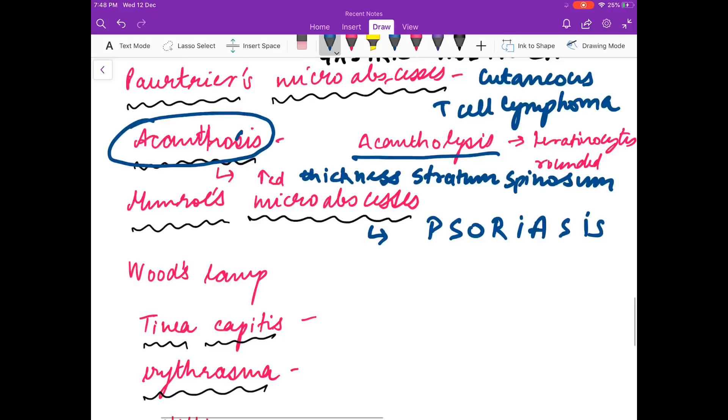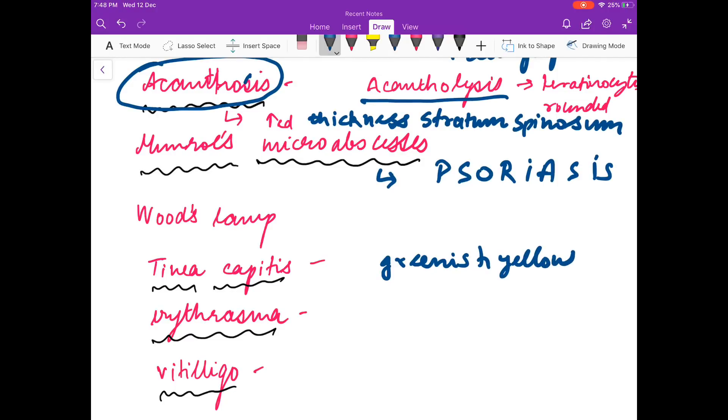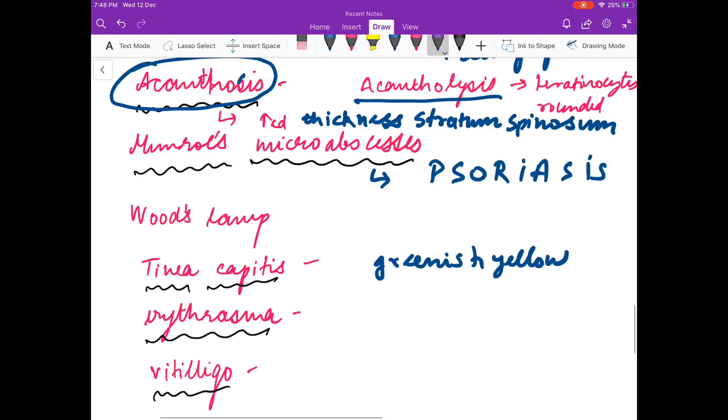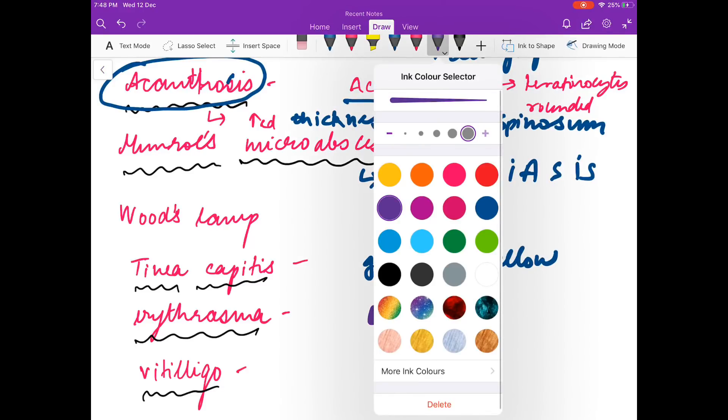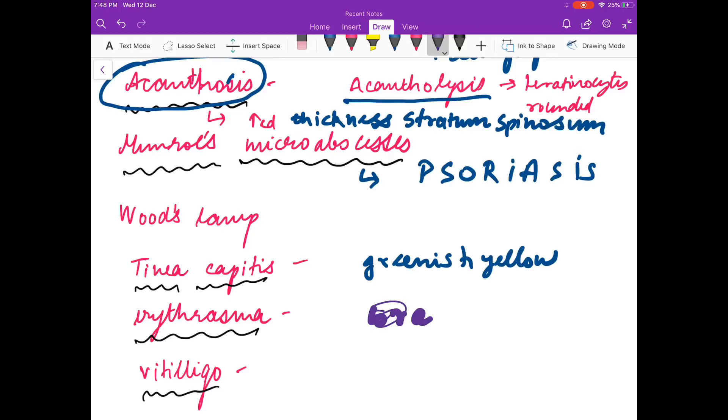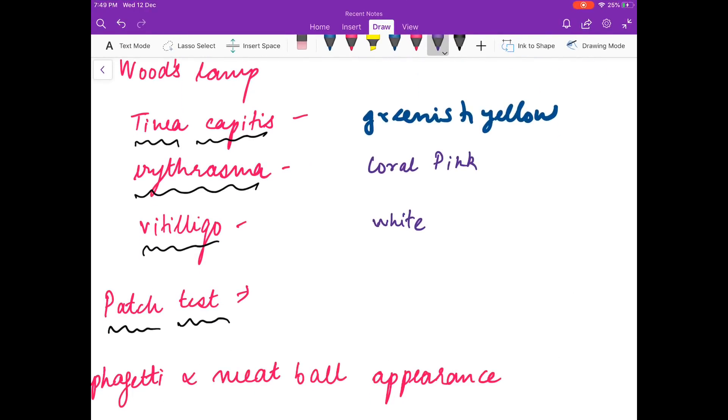Wood's lamp: on Wood's lamp, the color of tinea capitis gives green-yellow color. Erythrasma gives coral pink color. Vitiligo appears white.